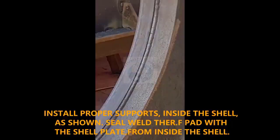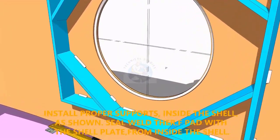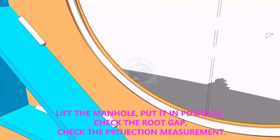Provide proper supports to control the distortion during welding. Weld a run on the joint between the shell plate and the pad plate.